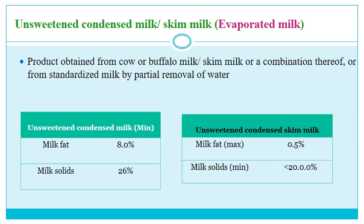The standard for unsweetened condensed milk — also called evaporated milk — covers products obtained from cow or buffalo milk or skim milk or a combination thereof, or from standardized milk, by partial removal of water. Requirements for unsweetened condensed full cream milk: milk fat minimum 8% and milk solids minimum 26%. For unsweetened condensed skim milk: milk fat maximum 0.5% and milk solids minimum 20%.